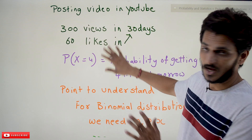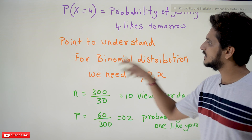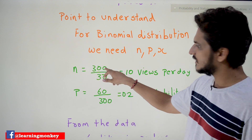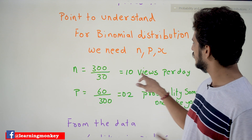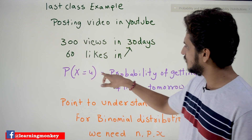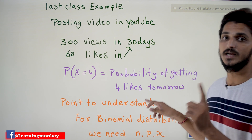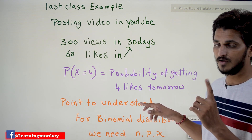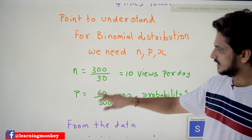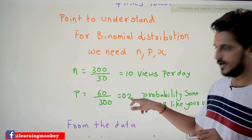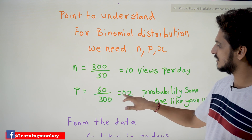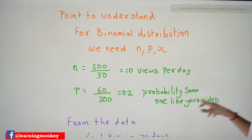For binomial distribution we need n, p, and x values. We identified n as 300 views in 30 days: n = 300 / 30 = 10 views per day. We do this because the question asks about one day. p is identified as 60 likes in 300 views: p = 60 / 300 = 0.2. So there is a 20% chance that someone will like your video.